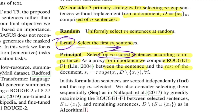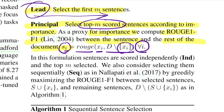For the principal strategy, the importance score for the i-th sentence is calculated as its Rouge score against all remaining sentences in the document, excluding the current one. This is done for all sentences, then re-ranked to pick the top M. Graph-based algorithms like TextRank or LexRank could also be employed here. In the independent (IND) variant, all sentences are scored independently with no dependency between their scores.